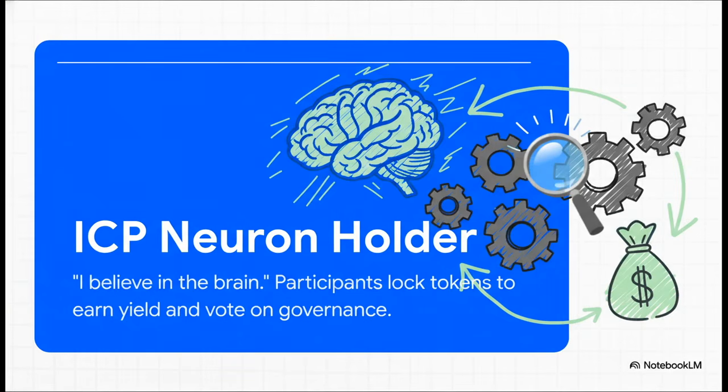So, role number one is the ICP neuron holder. You can think of this person as saying, I believe in the brain. These are the folks who lock up their tokens to show they have a real, long-term belief in the core compute. And for doing that, they get to earn yield and have a say in governance.